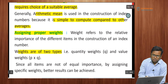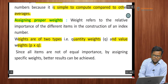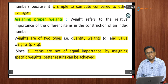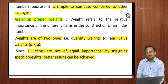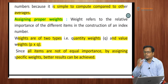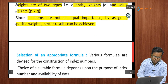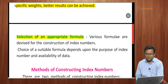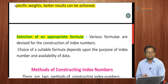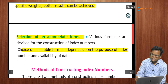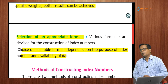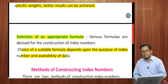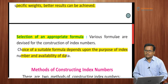Weights are of two types: quantity weights and value weights. Since all items are not of equal importance, by assigning specific weights, better results can be achieved. According to their importance, we should give them appropriate weight. Finally, the selection of an appropriate formula is needed — the choice of a suitable formula depends upon the purpose of the index number and the availability of data.